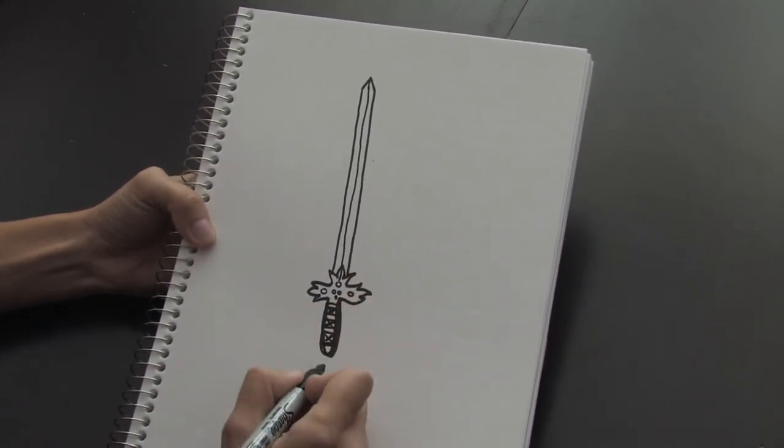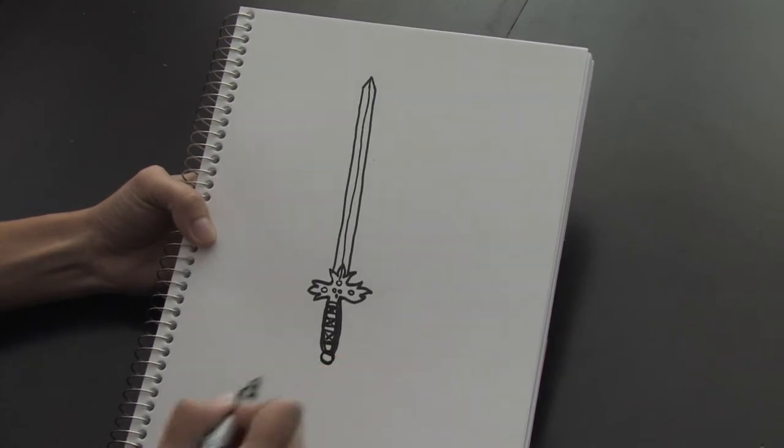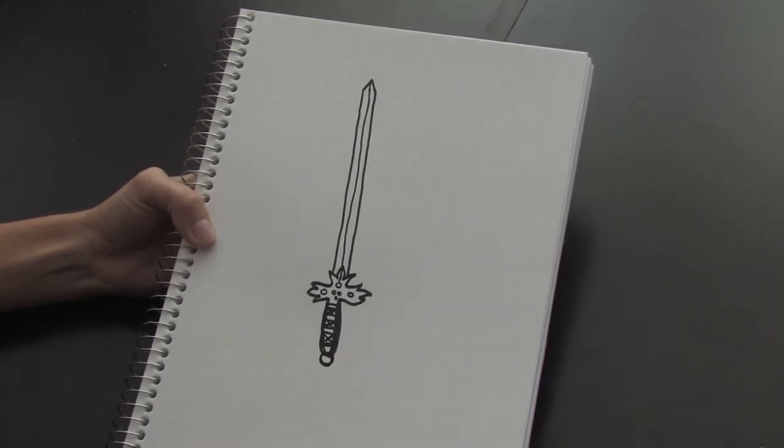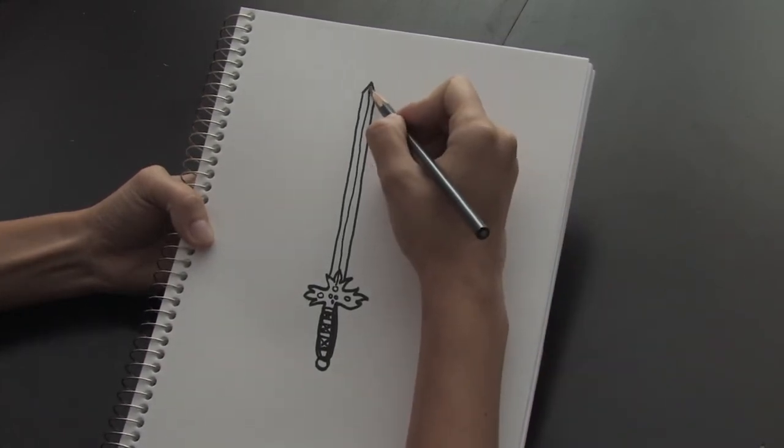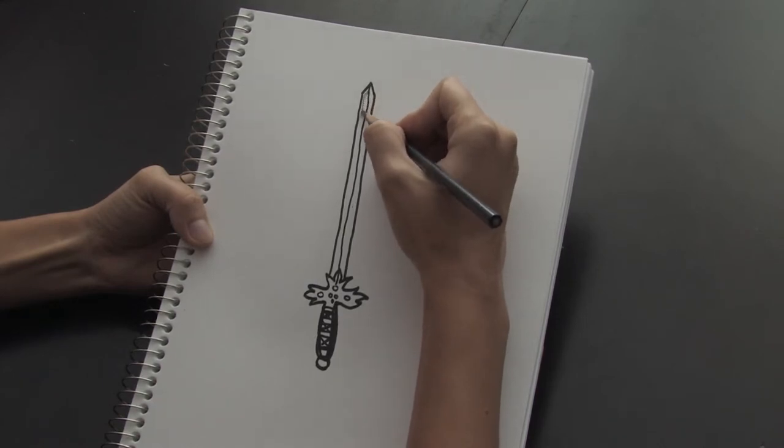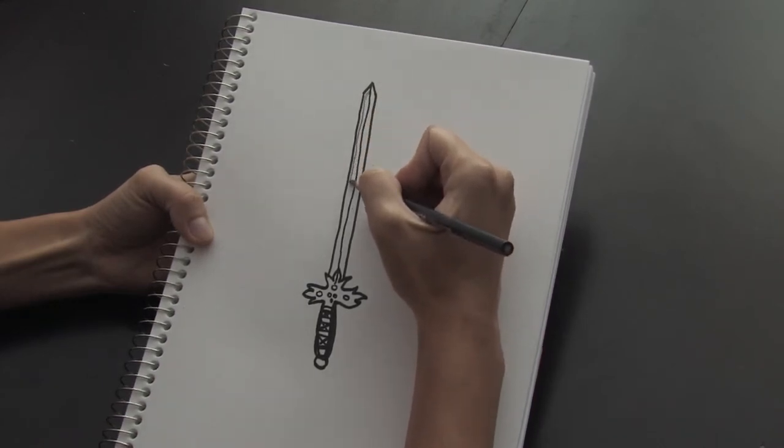And let's put some pommel on the end, and maybe we add some details like outlining around the blade to show you that it's sharp around the edges.